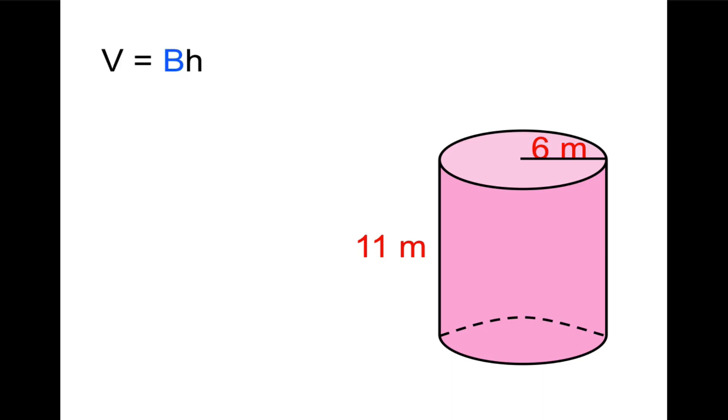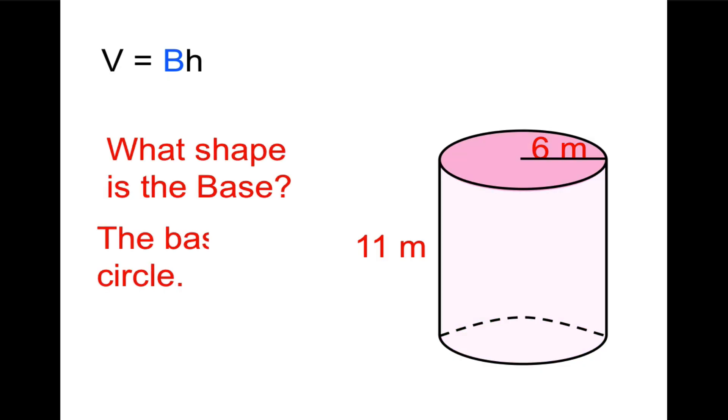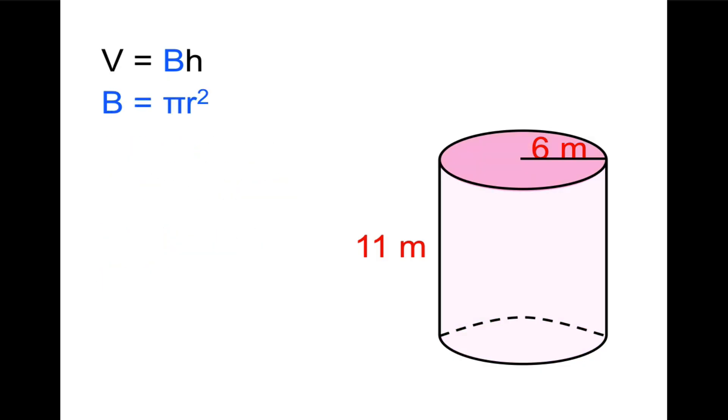Find the volume of the cylinder. Volume equals big B times h. Big B will equal, well, it's a circle. Big B therefore will equal πr². In this instance, the radius is 6. So we're going to have π times 6 squared. 6 squared is 36, and 36 times 3.14 equals 113.04.